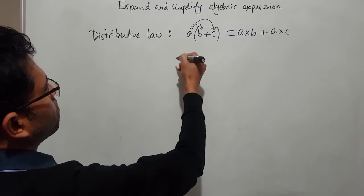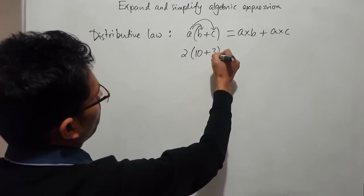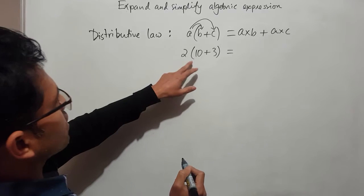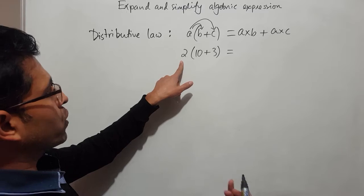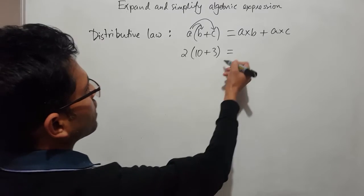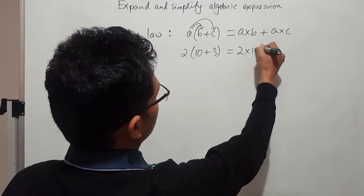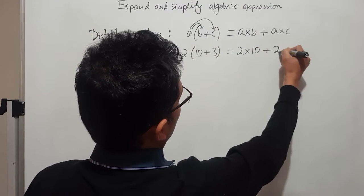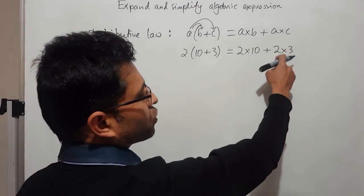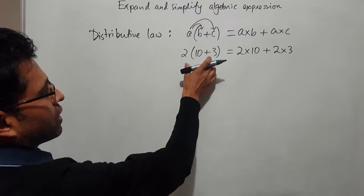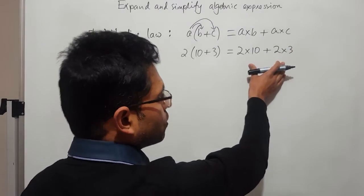Same like if I said 2 of 10 plus 3, we know that this is basically 10 plus 3 is 13, 13 times 2 is 26. We can write this one using the distributive law: 2 times 10 plus 2 times 3. So 2 times 10 is 20 plus 3 times 2 is 6, so 26. This side 26, this side also 26.